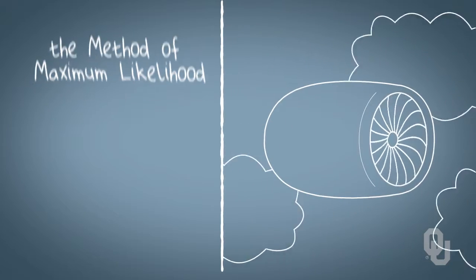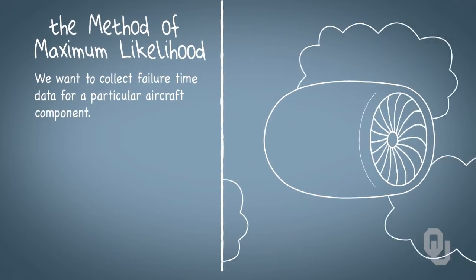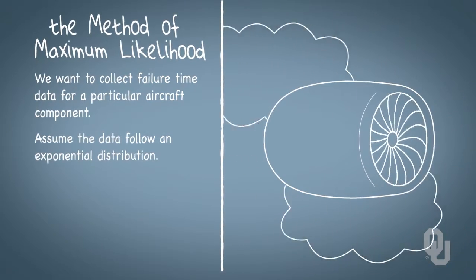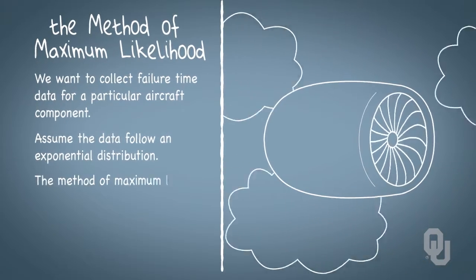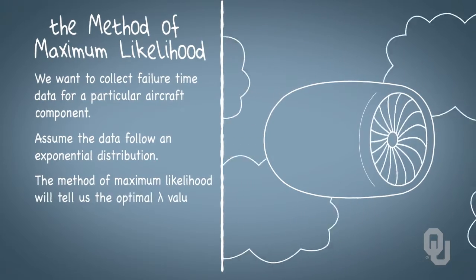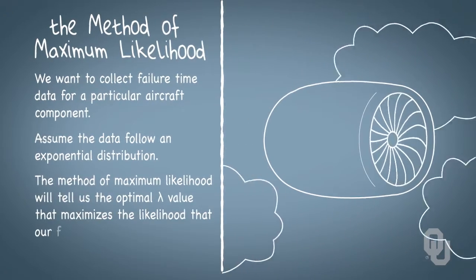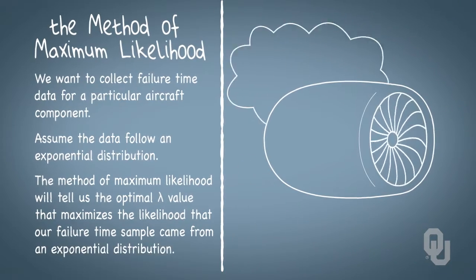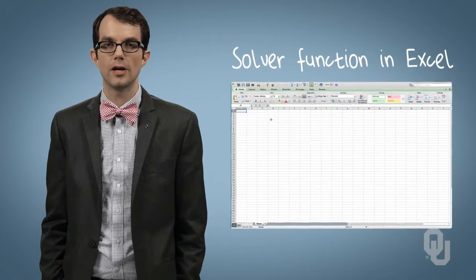For example, say we collect some failure time data for a particular aircraft component. Let's assume that the data follow an exponential distribution. We would use the method of maximum likelihood to tell us the optimal lambda value that would maximize the likelihood that our failure time sample came from an exponential distribution. Sometimes this is a straightforward calculation, sometimes it's not. We'll talk about the solver function in Excel to help us out with this.